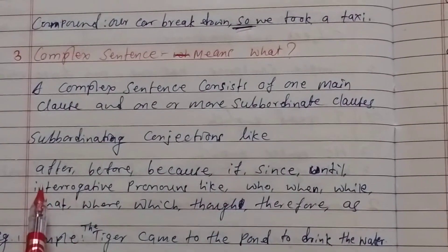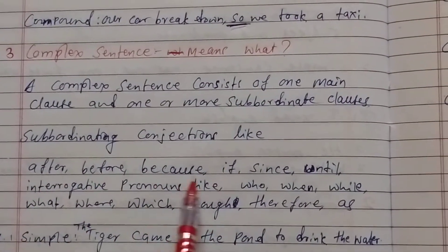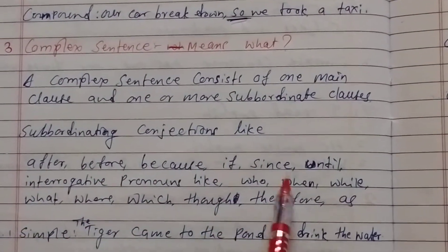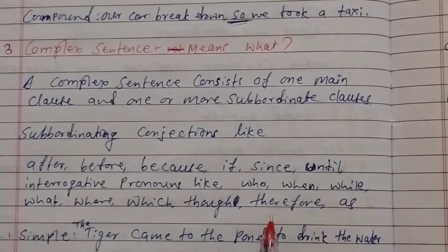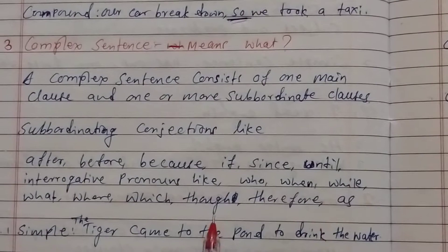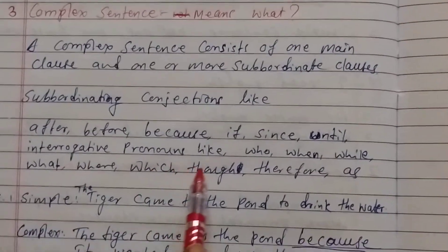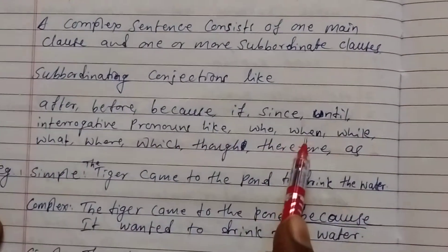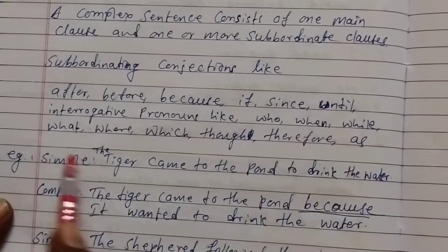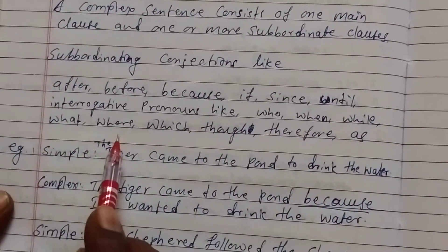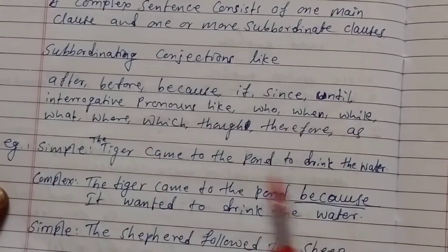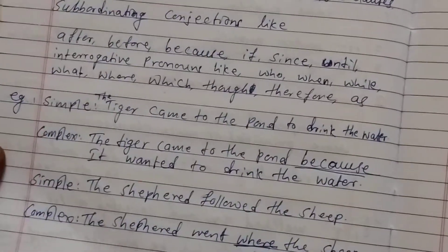Subordinating conjunctions like: after, before, because, if, since, until, therefore, as, though. And interrogative pronouns like: who, when, while, what, where, which, whom — they are working in complex sentences.